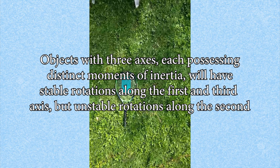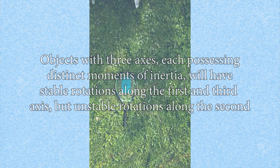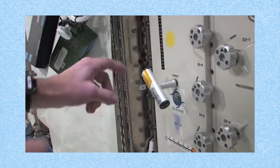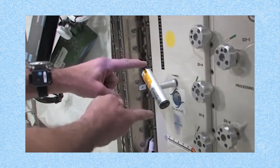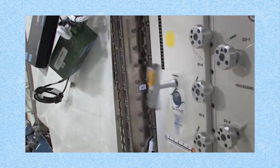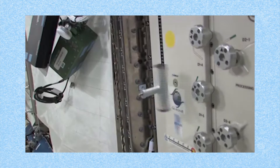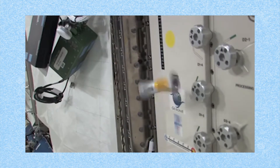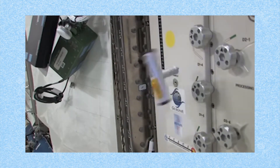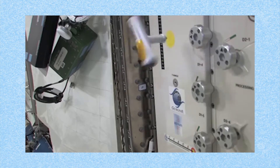This effect can be seen much more clearly in a low-gravity environment. Videos from the International Space Station show the intermediate axis theorem taking place. Since there's no gravity making the object fall, we can see just how unbelievable the effect really is.